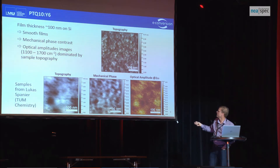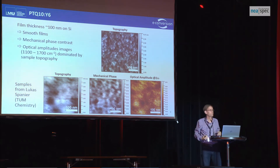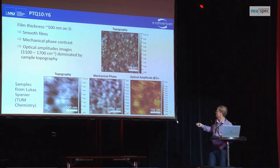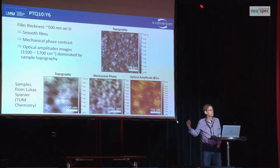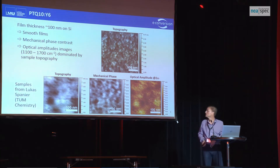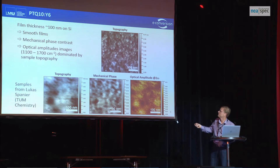In a zoom-in, you can see the mechanical phase that shows a distinct contrast on a length scale of 20–30 nanometers, suggesting that there are indeed different components. The optical amplitude image, for instance at the second harmonic, shows a contrast that is more or less the inverse of the topography, telling us there is no clear material contrast but rather topography-related contrast reflecting the local film thickness. Typical film thickness is on the order of 100 nanometers; samples are on silicon.